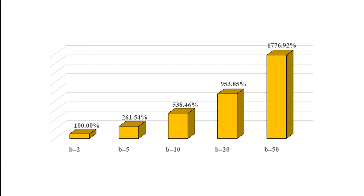However, using b equals 50 will cost 18 times the computing time compared to the one generated by b equals 2.